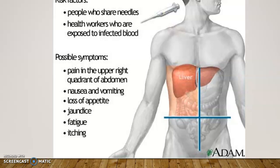Another hallmark symptom of hepatitis is jaundice, where a yellowish tint develops in the sclera, or the white part of the eye. It can get bad enough that the skin even becomes yellow, and this is due to bilirubin being elevated in the blood.